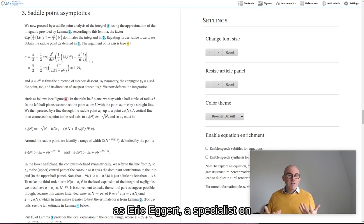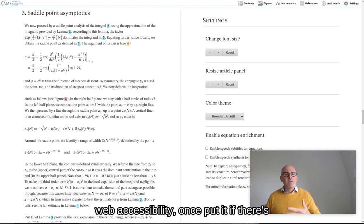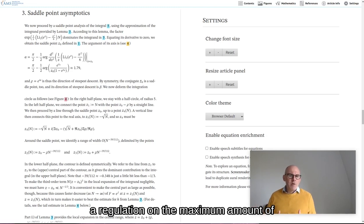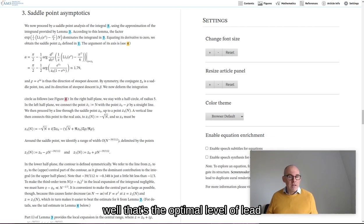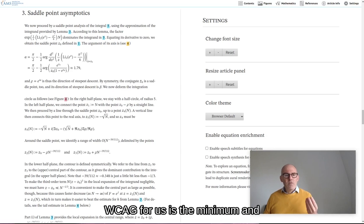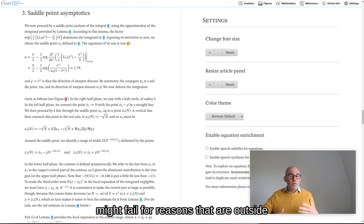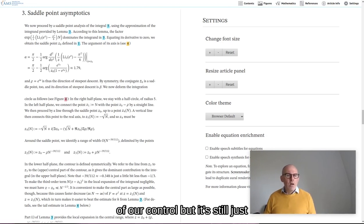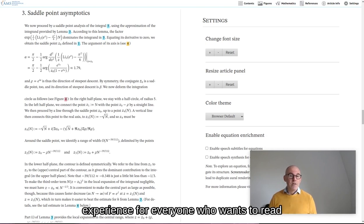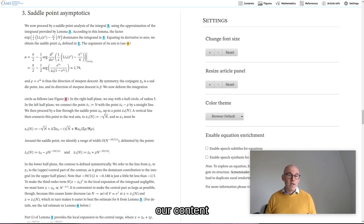As Eric Eggert, a specialist on web accessibility once put it, if there's a regulation on the maximum amount of lead in water, then nobody would think, well, that's the optimal level of lead in water. So this is not what we want to do. WCAG, for us, is the minimum. And sometimes, we have to admit that we might fail for reasons that are outside of our control, but it's still just the minimum. The very least we can do is try to be much better than that, and actually create a highly usable reading experience for everyone who wants to read our content.